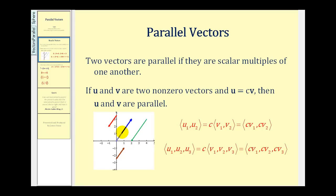Another way to express parallel vectors in component form in R2 and R3 would be as follows. If vector u expressed in component form as (u₁, u₂) is equal to c times vector v expressed as (v₁, v₂), then u₁ would equal c times v₁ and u₂ would equal c times v₂. The reason it's nice to express it this way is if we want to determine if two vectors are parallel, we can set u₁ equal to c times v₁, find the value of c that makes that true, and then check to make sure that u₂ is equal to c times v₂.